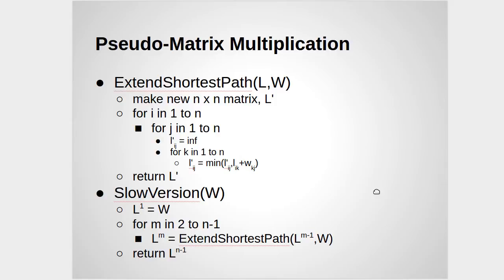We have this routine called ExtendShortestPath, and we pass it some matrix L and then the weight matrix W, which is the graph itself. And we're going to make a new matrix L' that is a kind of pseudo product of L and W.